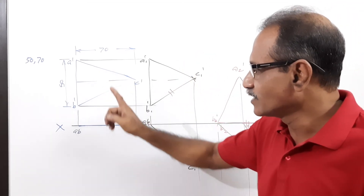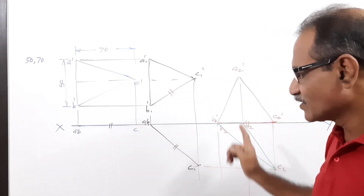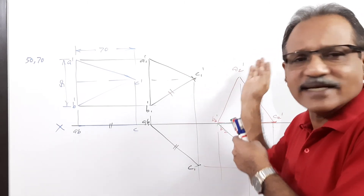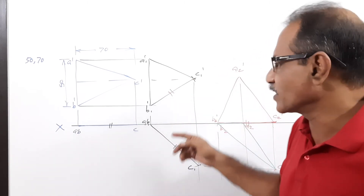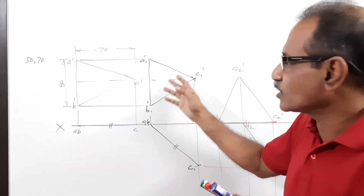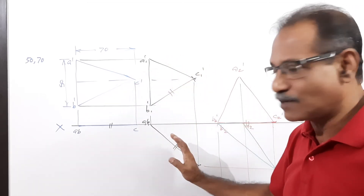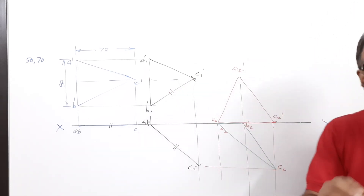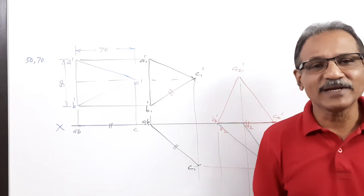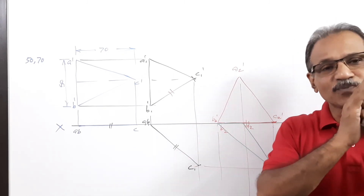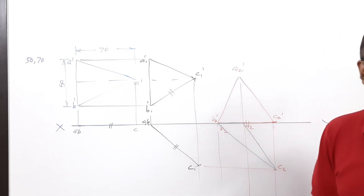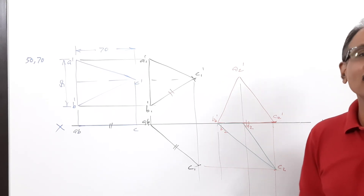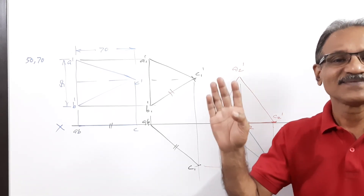Since the angle is not known, we produce the elevation first and then produce the plan. Because we know it must be an equilateral triangle, we project horizontally, make the equilateral triangle, get the plan, then redraw the elevation. For a student who knows this procedure, it hardly takes five minutes. If you're happy with the presentation, please subscribe to my channel and share it among your friends. Thank you.